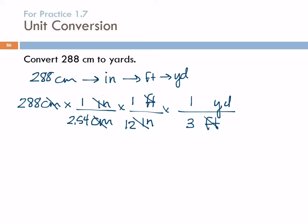They're like, no, I just need to follow the pattern. That's fine if you do that. Personally, I don't enjoy multiplying by one. So I'm going to do 288 divided by 2.54 divided by 12 divided by 3 equals. And then my calculator gives me this big long answer, 3.149606299. The unit is yards.